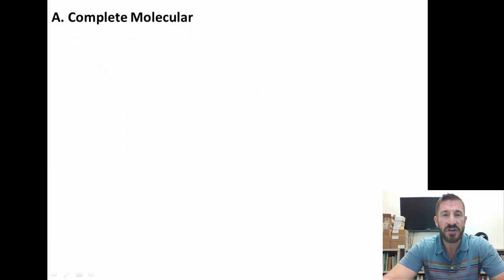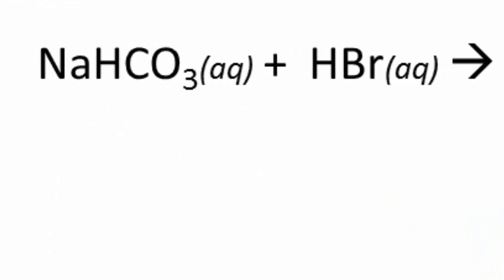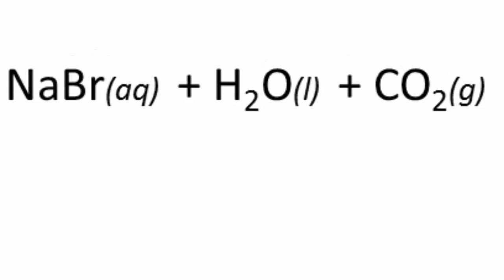First, the complete molecular equation. Sodium hydrogen carbonate is now aqueous — it's not a solid this time. Hydrobromic acid is also aqueous. So we have two aqueous reactants. The products are similar: sodium bromide as our salt, water, and carbon dioxide.